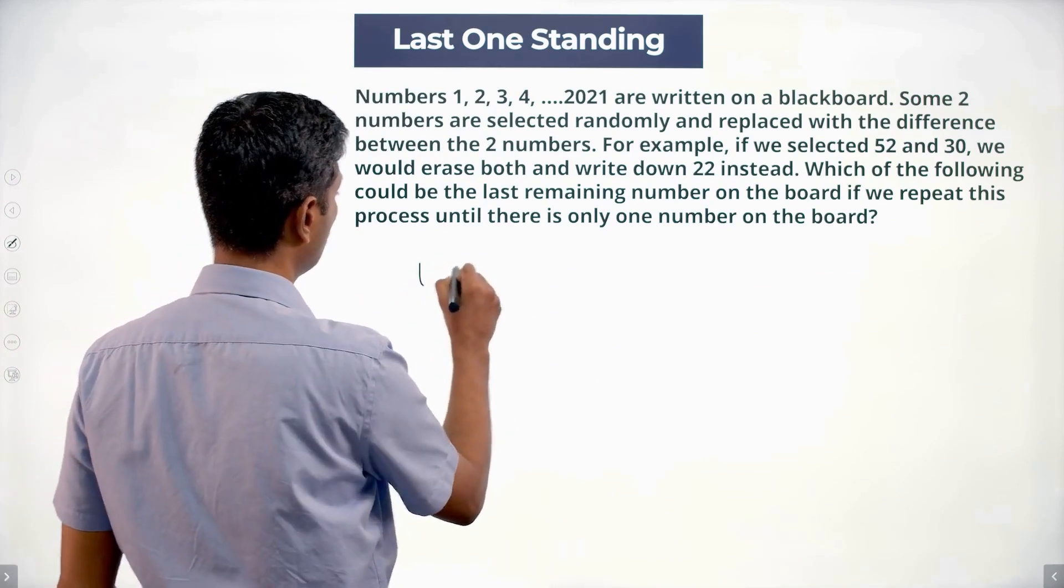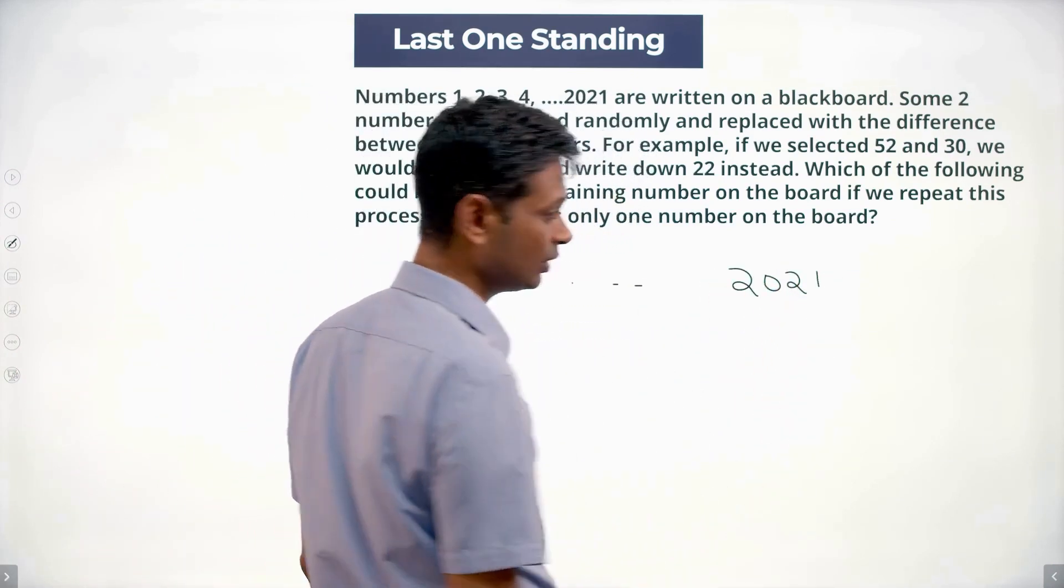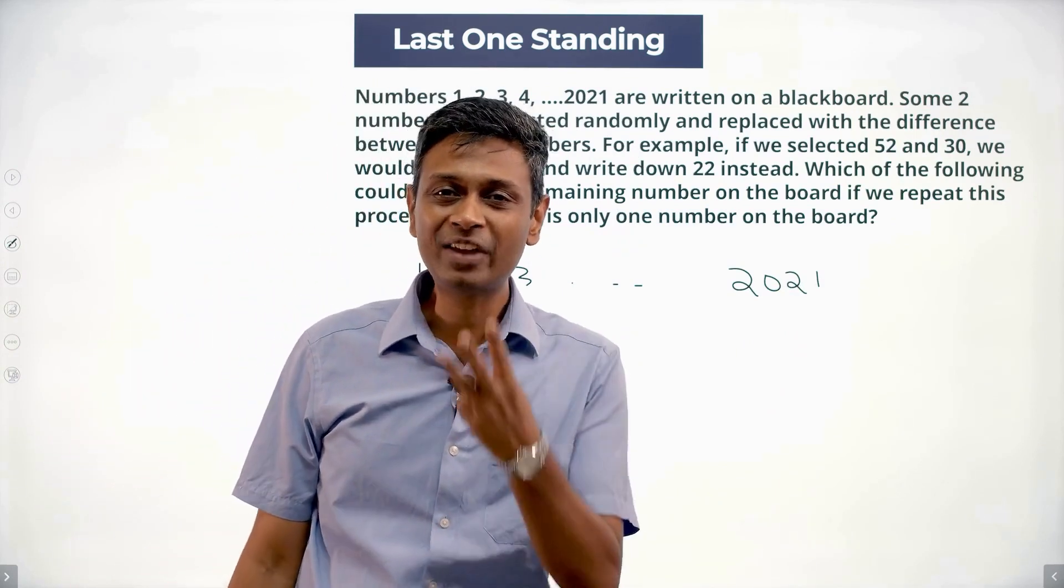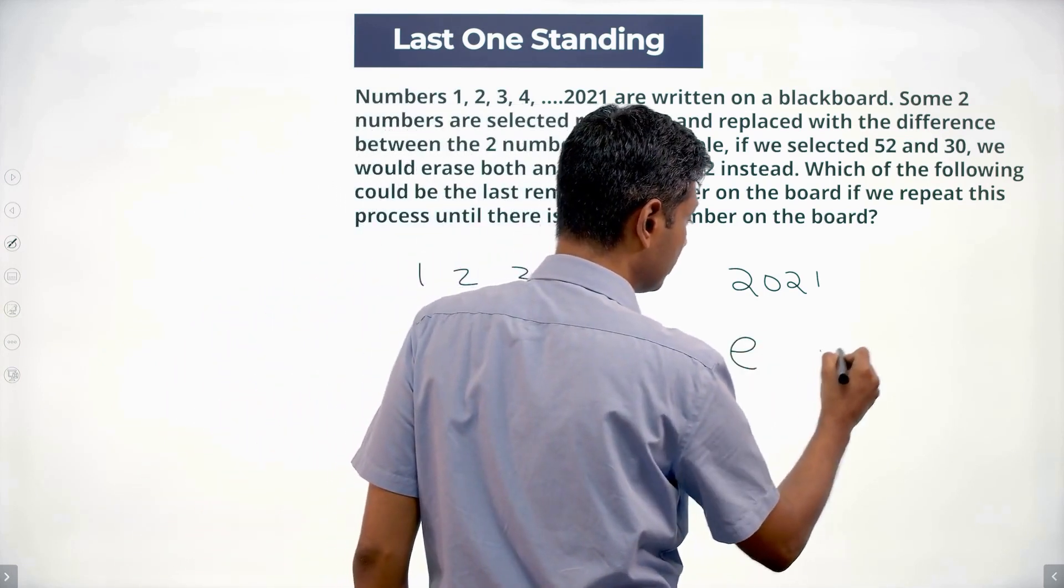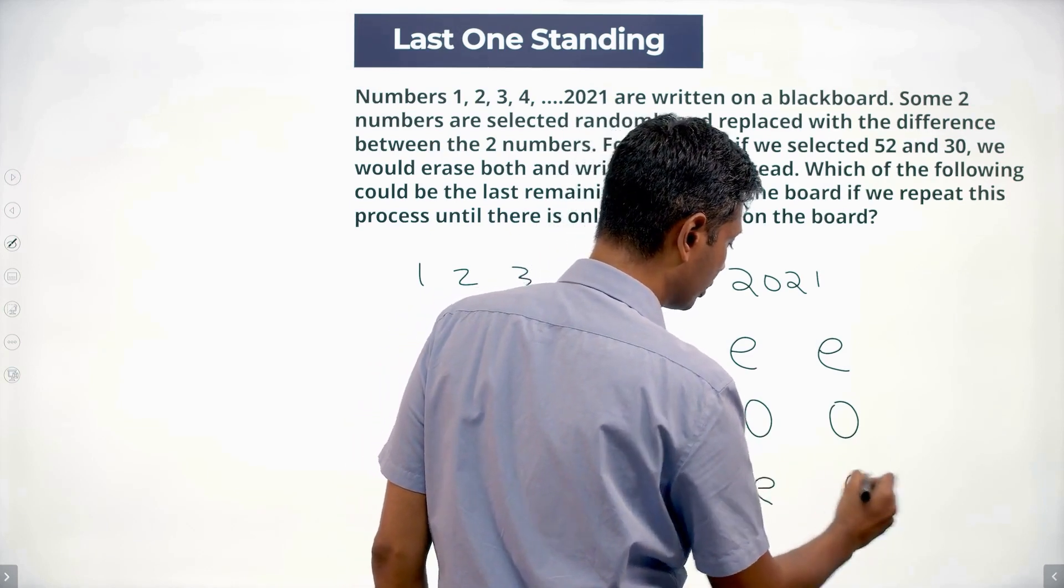So I have 1, 2, 3, 4 through 2021. Out of these, I'm selecting two numbers. There are three ways of selecting this. I could select both numbers to be even, both numbers to be odd, one even and one odd.